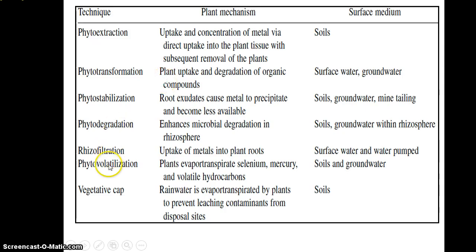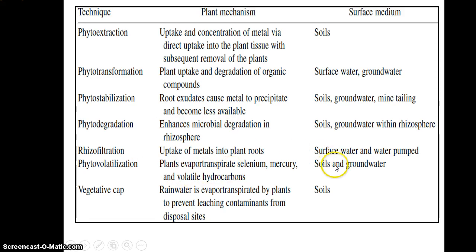Phytovolatilization: the plant absorbs the contaminant from the water, and it is then released into the air through the leaf. This technique is used for soil and groundwater contaminants.